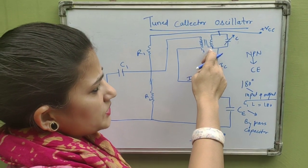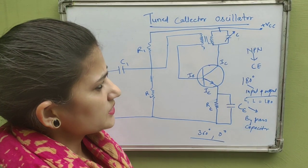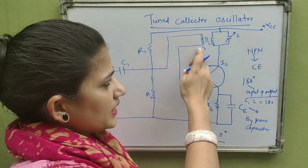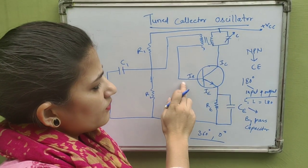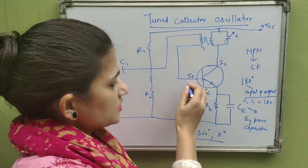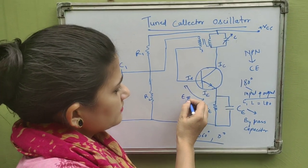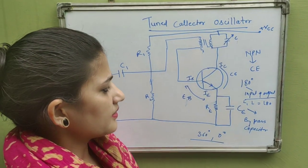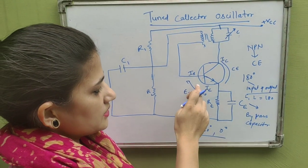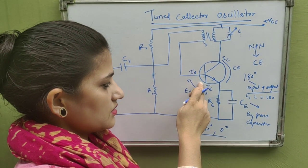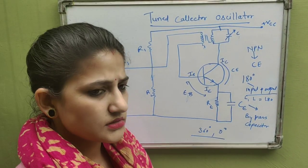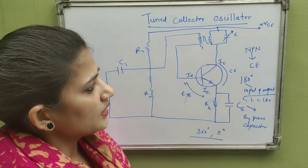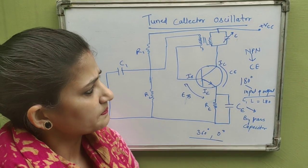The frequency of oscillations changes due to the changing values of inductor and capacitor. This change in L produces a change in L1, which induces an EMF in L1. This induced EMF is fed back to the emitter-base junction, increasing its forward biasing. As IB increases, IC increases, which again changes the oscillation frequency of the tank circuit.